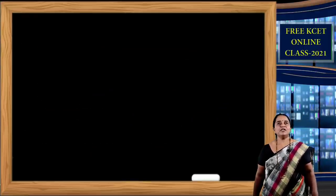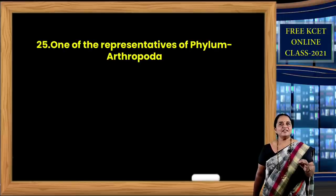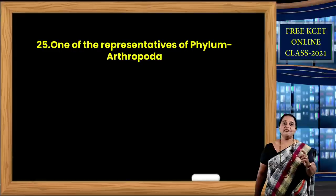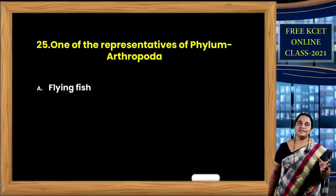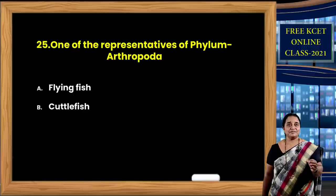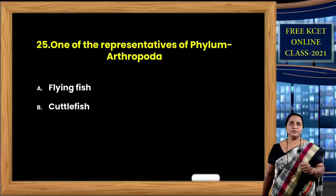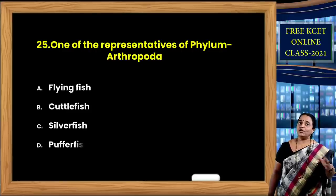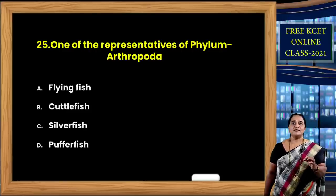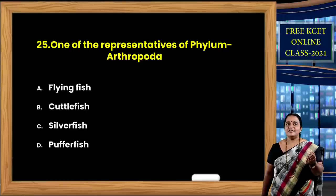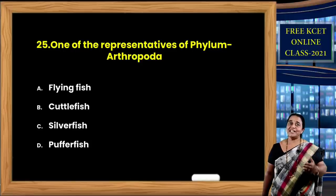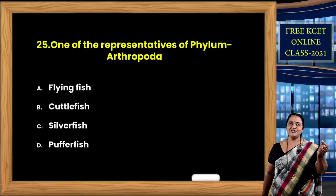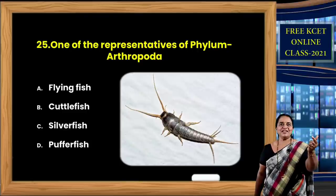Question 25: One representative of phylum Arthropoda. Flying fish (Exocoetus) is from Pisces. Cuttlefish and pufferfish are from different groups. Silverfish is an insect — found in book shelves; if books are kept for many days, you find this silver-like delicate animal moving around, leaving a silvery coating on your fingers. So the correct option is C — silverfish.